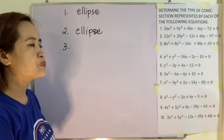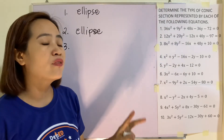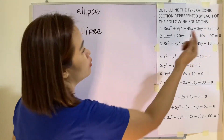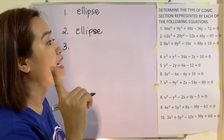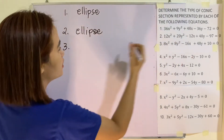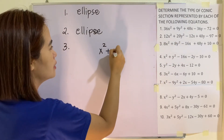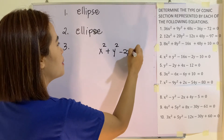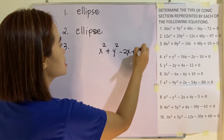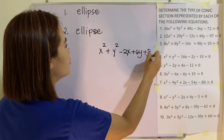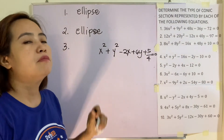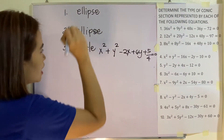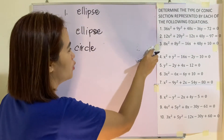For number three, both x squared and y squared have numerical coefficients and they are both positive. But notice that all terms are almost divisible by 8. So if you divide everything by 8, that will be x squared plus y squared minus 2x plus 6y plus 5 over 4 is equal to 0. This one becomes a circle — it is an equation of a circle.